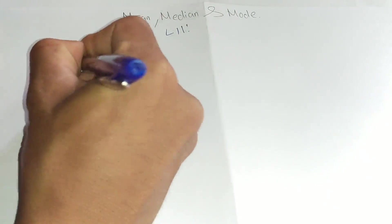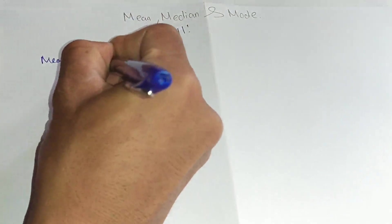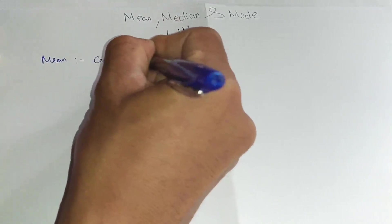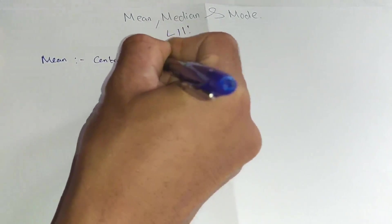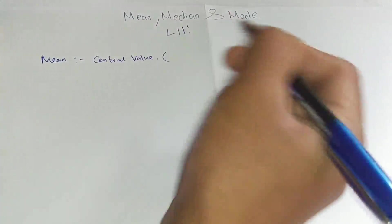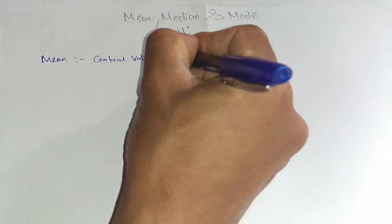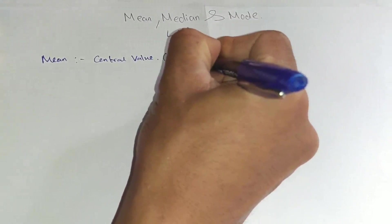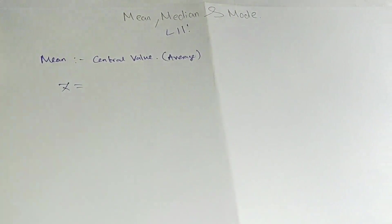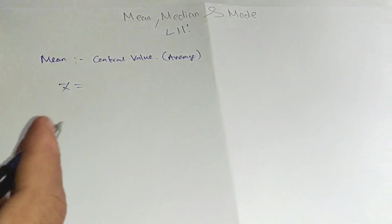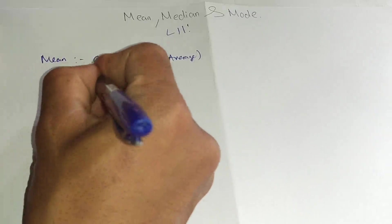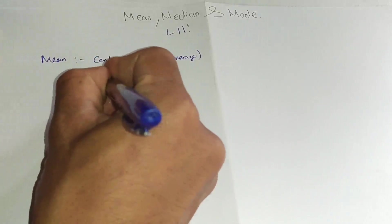Mean simply means the central value. It is also called as average. The formula for mean uses X-bar, where X-bar is equal to sigma X.